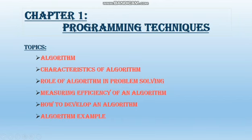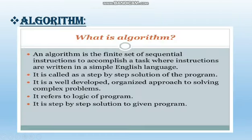Let's start with the first topic: algorithm. What is an algorithm? An algorithm is a step-by-step solution of a problem. When we write the solution of the problem step-by-step in order, that is known as an algorithm. For that purpose, we need input, logics, and output. So for writing an algorithm, we must know the input, process, and output. Then we can write it in a proper way.